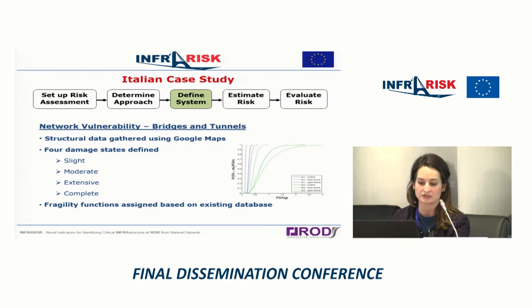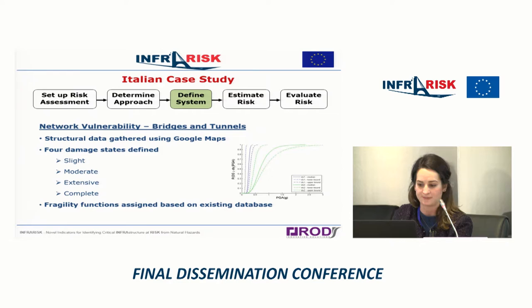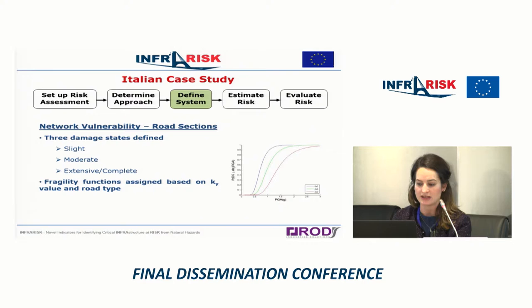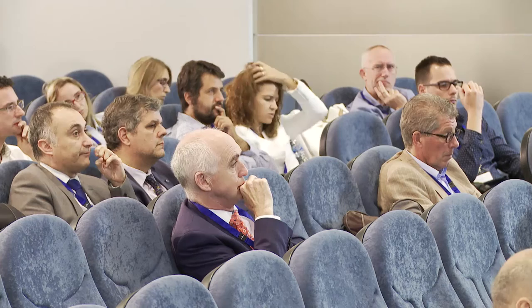Four damage states were defined for the bridges and tunnels: slight, moderate, extensive, and complete. Additionally, we assigned fragility functions to road sections to characterise vulnerability to earthquake-triggered landslides, also presented in terms of peak ground acceleration. Because we had determined the landslide yield acceleration values for the region, we were able to draw a direct link between the earthquake hazard and the earthquake-triggered landslide hazard. Three damage states were defined for each road section, assigned based on the landslide yield acceleration value and the road types and number of lanes.